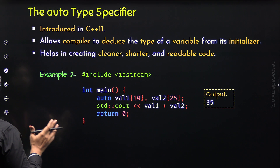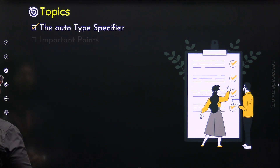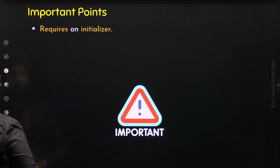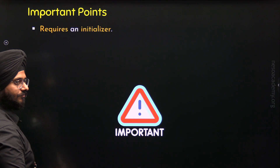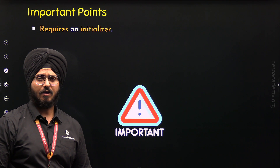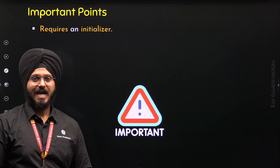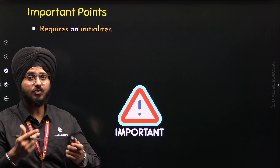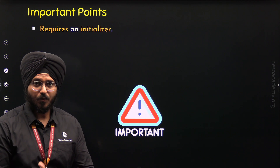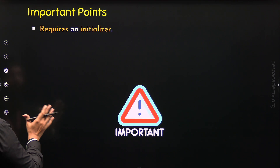Now we are done with the first topic — the Auto Type Specifier. Let's move to the second topic, where we will understand some important points about the Auto Type Specifier. The first point is: it requires an initializer. If we specify the type of a variable as Auto, the compiler will deduce the type based on the initializer. If we do not specify an initializer, type deduction is not possible. Therefore, it is important to initialize a variable of type Auto.